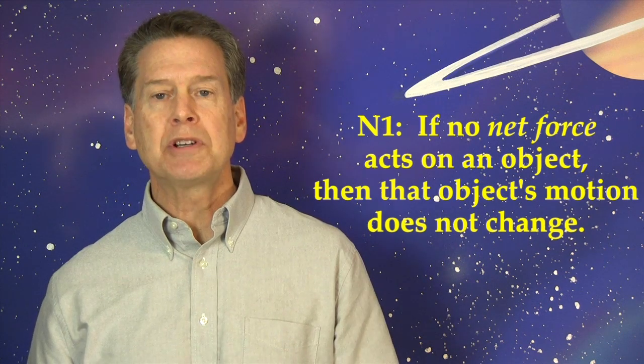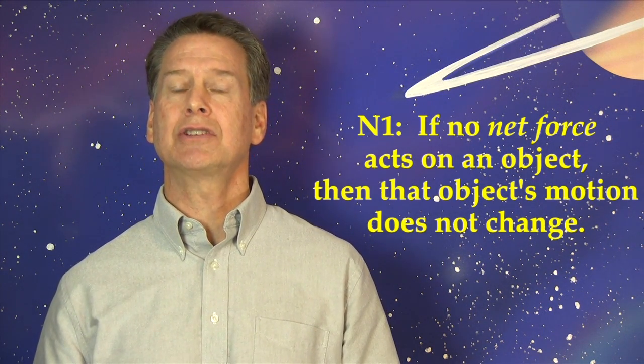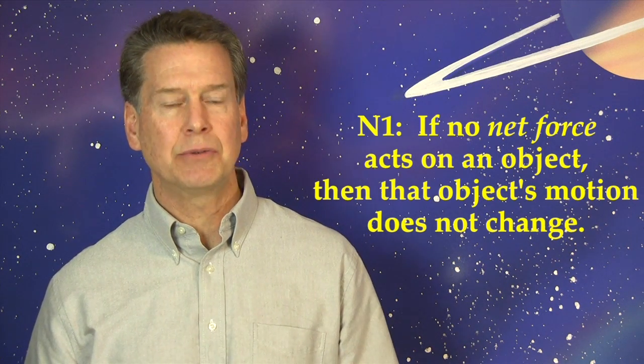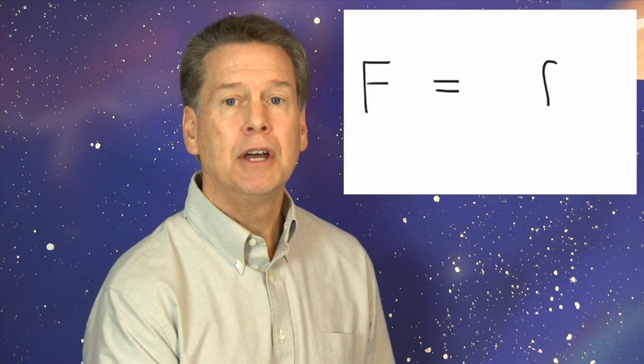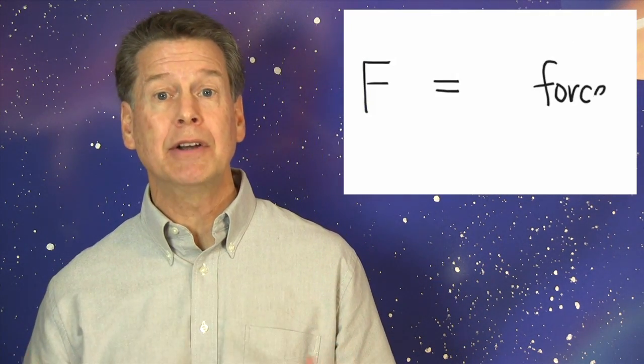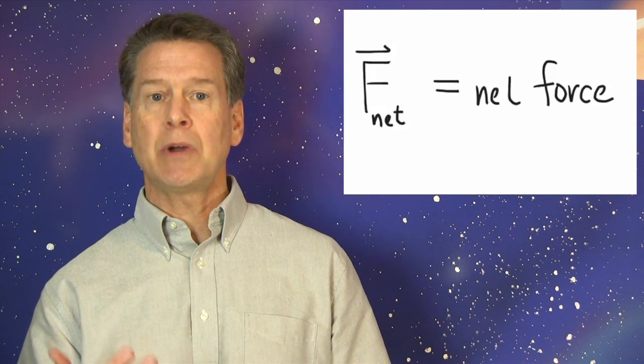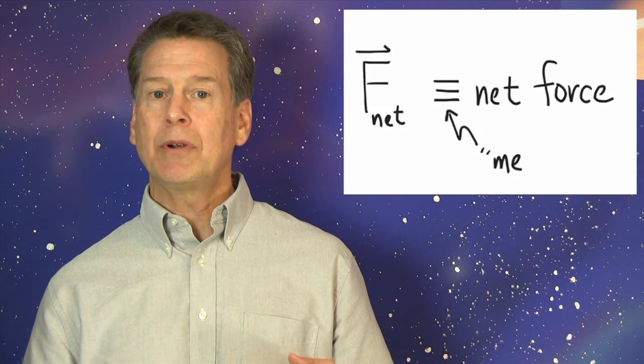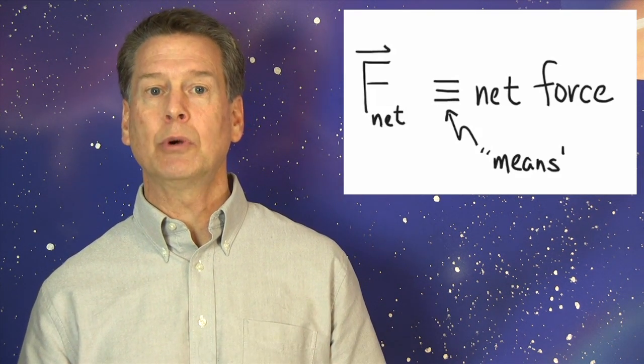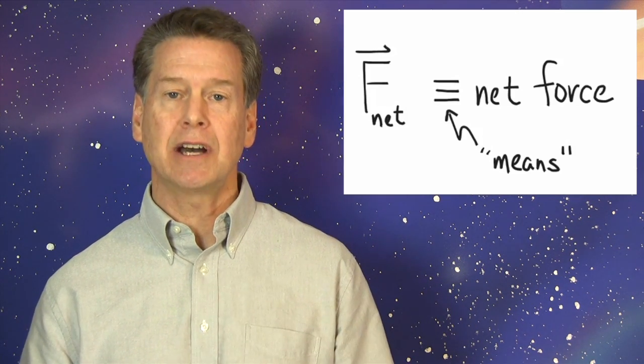N1 says if no net force acts on an object, then that object's motion does not change. Let's see if I can make this easier to write. Let's symbolize force with the letter capital F. I'll put an arrow over the F to remind me that direction matters. Force is a vector quantity. And we denote net force by writing that word as a subscript, F sub net. Remember, net just means total force. The sum of all force vectors that act on an object at a given time.